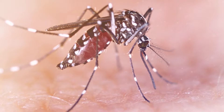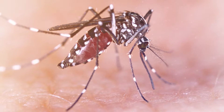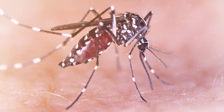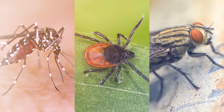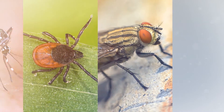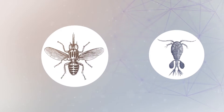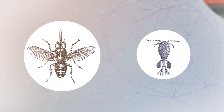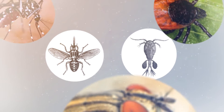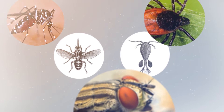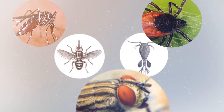Vector-borne diseases are transmitted typically by the bite of an infected arthropod. The arthropod could be something very familiar to us such as a mosquito, tick, or fly. Or it might be a less familiar species such as an African tsetse fly or copepod. These arthropods that carry and transmit disease are known as vectors.